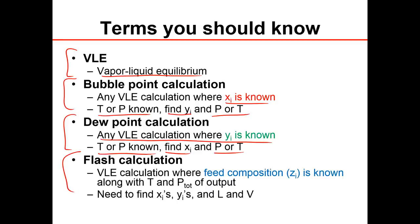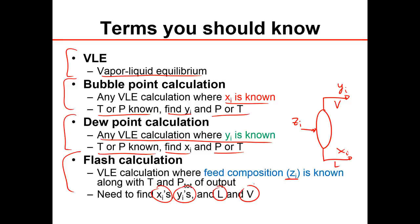For a flash calculation, this is a VLE calculation where the feed composition zᵢ is known. We introduce variables for the vapor composition yᵢ and liquid composition xᵢ. V is the molar flow rate of the gas, and L is the molar flow rate of the liquid. We need to find the xᵢ's, yᵢ's, L, and V.